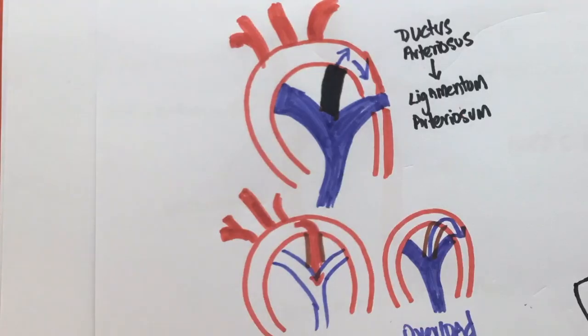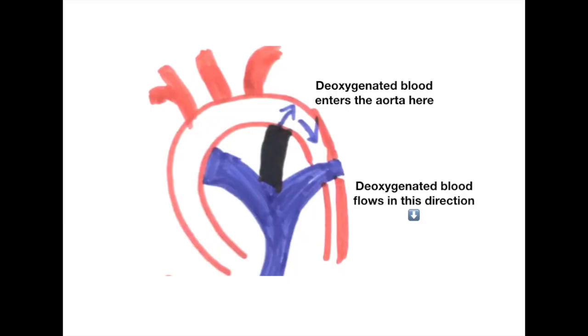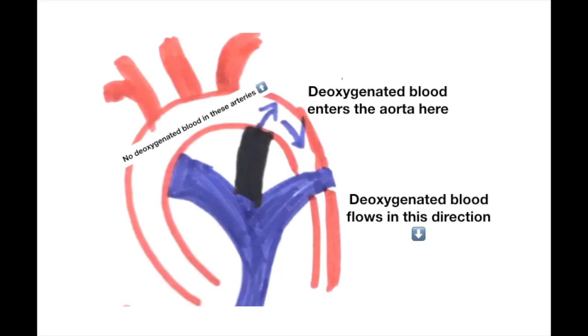This increases the flow of deoxygenated blood into the descending aorta. Since the mixing happens here, the structures which receive blood from the descending aorta will have less oxygen supply. The subclavian and the carotids will not receive the deoxygenated blood. So the upper part is unaffected.